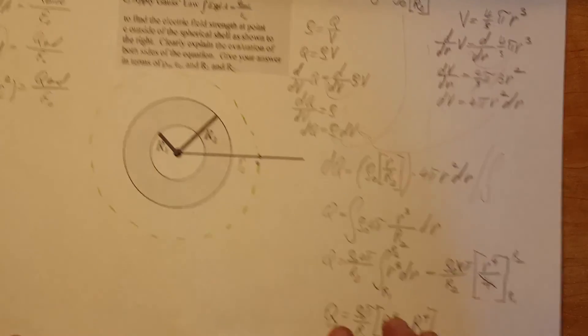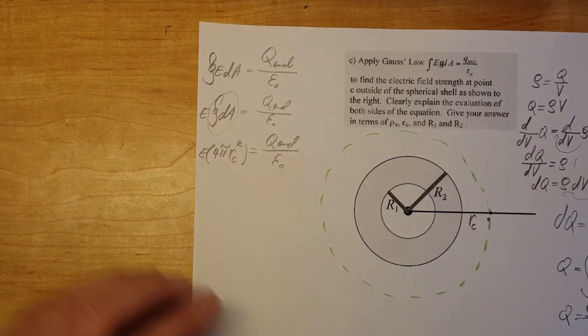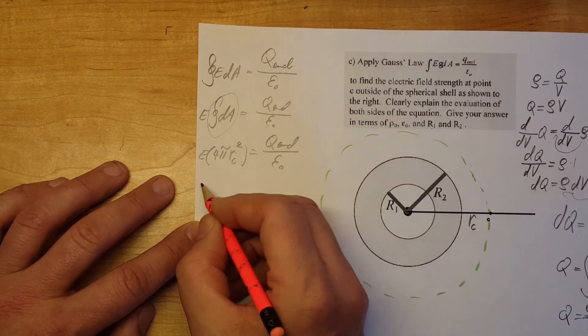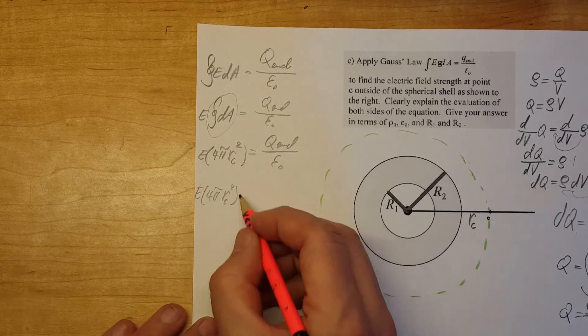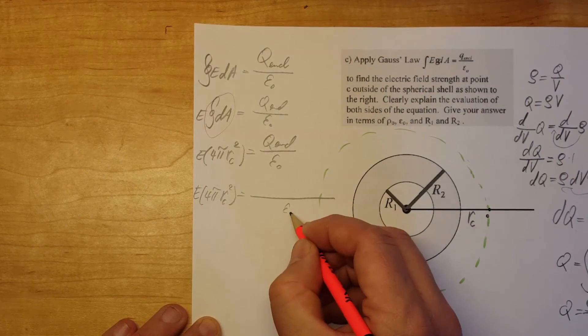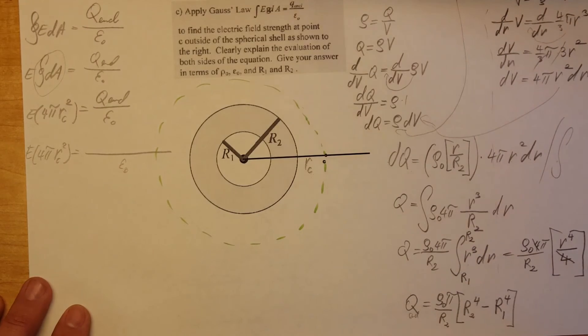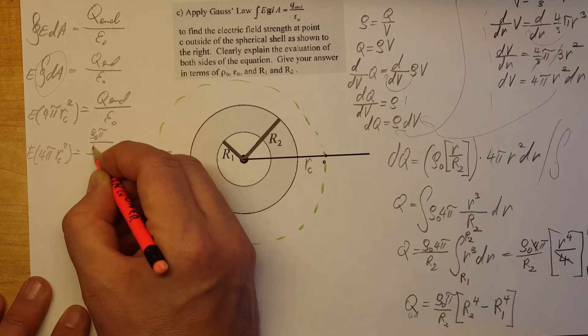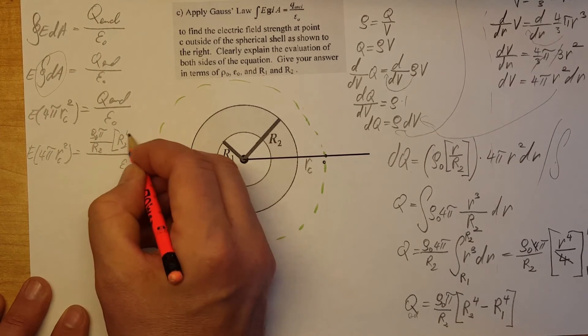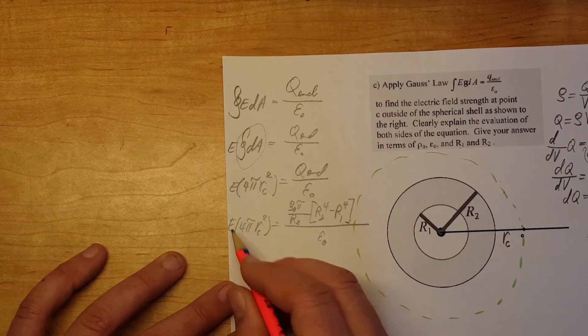That we're going to come and bring all the way here and plug it in for our Gauss's law formula. So E times 4 pi Rc squared. We don't touch this side. Come here. On the bottom we have the permittivity E0 and we're going to put on top of it this. So Rho 0 pi over R2, R2 to the 4th minus R1 to the 4th. There you go. Now we're going to simplify it down and make it look prettier and solve for E.